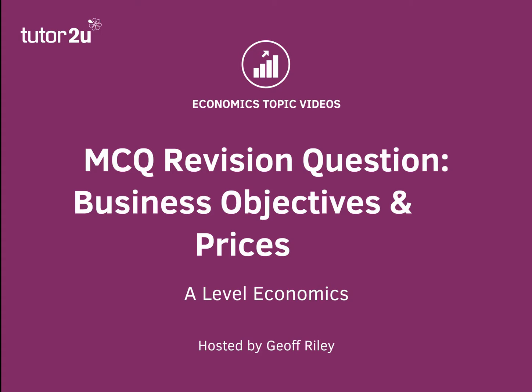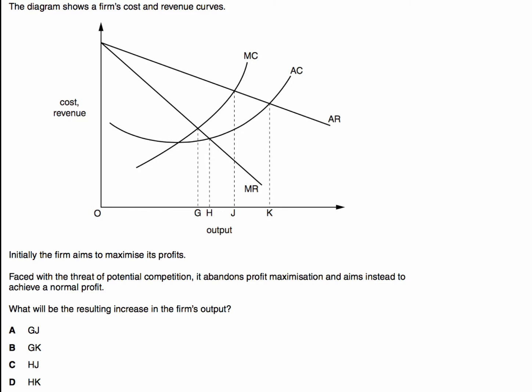Hi there, examiners are really keen to ask multiple choice questions that test your understanding of how a change in business objectives affects the price and output in a market or in an industry. So let's take a look at this question. The diagram shows a firm's cost and revenue curves, downward sloping AR and MR, so a firm in imperfect competition clearly, standard looking cost curves.